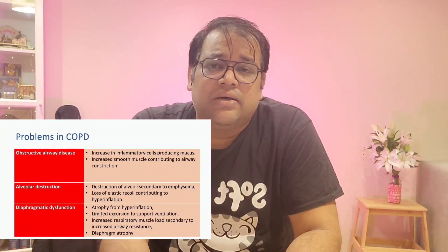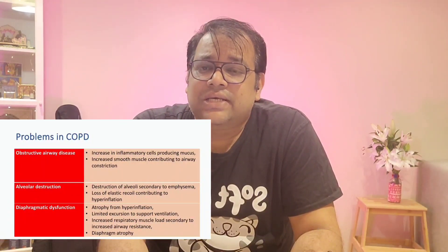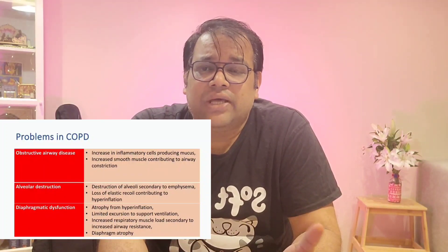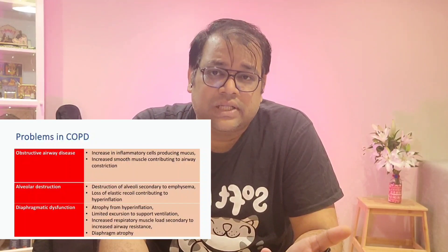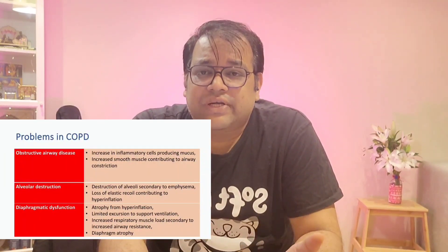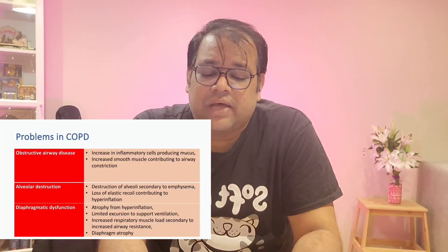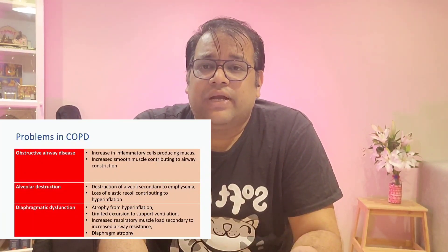Now let's discuss the problems in COPD, the strongest indication for hypercapnic respiratory failure. There are three main problems: first, narrowing of the airway due to obstructive airway disease from excessive secretions and smooth muscle hypertrophy. Second, destruction of alveoli — as in emphysema — leading to loss of elastic recoil and hyperinflation. Third, diaphragmatic dysfunction: hyperinflation compresses the diaphragm, causing atrophy and limited excursion, with significant respiratory muscle stress.